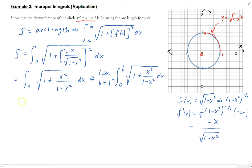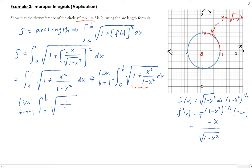Simplifying underneath the square root, we end up getting the square root of 1/(1 - x²) dx. The antiderivative of 1/√(1 - x²) turns out to be arcsin(x).